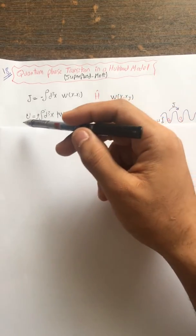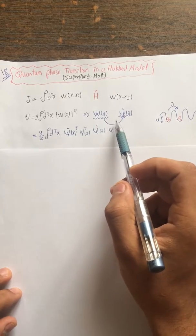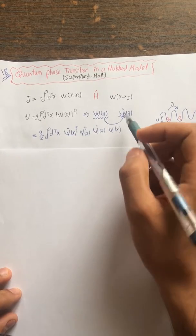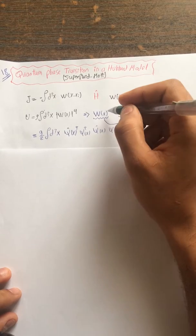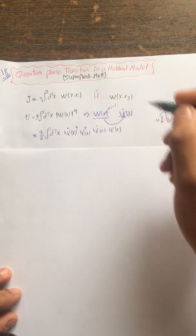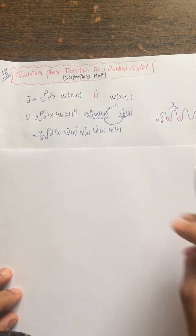If you have one particle, there is no U, because the particle does not interact by itself. Now let us promote this Wannier basis and make an expansion in the Wannier basis — we will expand the field operator in the Wannier basis for these localized Gaussian wave functions. For the field operator psi, I expand over all sites i, with X replaced by X minus X_i, and apply the annihilation operator to recover this wave function.